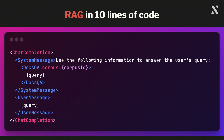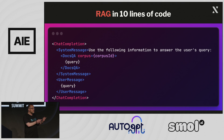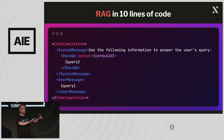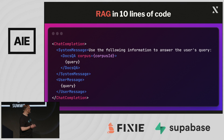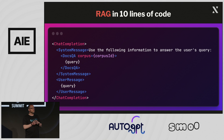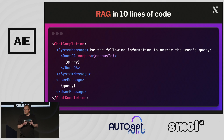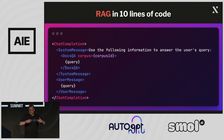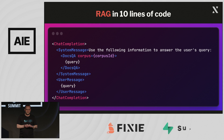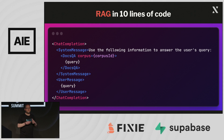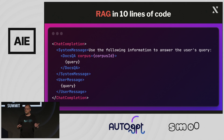This is RAG — retrieval augmented generation — in something like 10 lines of code. In AI JSX, we have a chat completion with two children: the system message and the user message. The system message says use the following information to answer the user's query, and it gets that information using a DocsQA component configured with a corpus of documents you've crawled, indexed, and placed in a vector database. You provide the user's query, the DocsQA component returns relevant chunks, places them in the system message, and the user message contains the query again — resulting in retrieval augmented generation. This is a lot easier to understand, manipulate, and integrate with other applications.